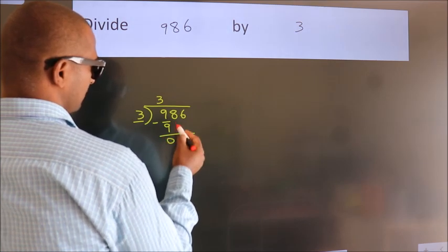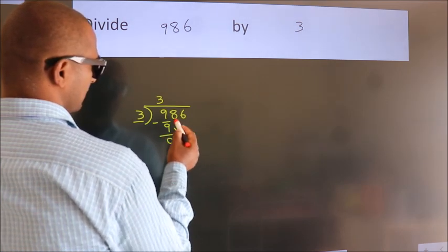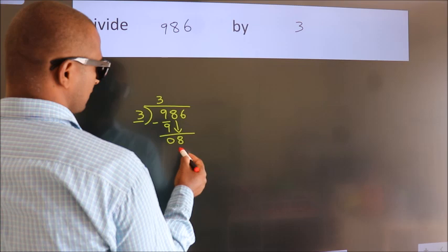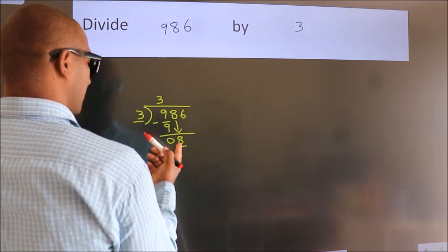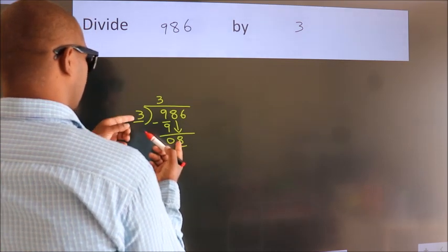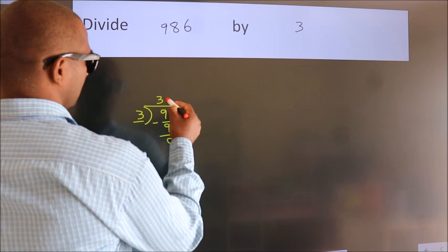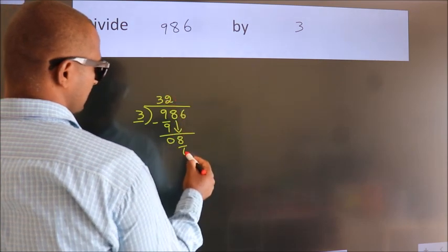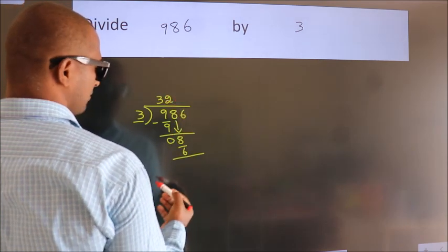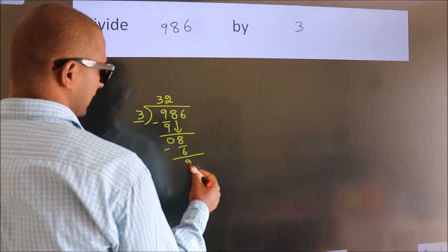After this, bring down the beside number. So 8 down. So 8. A number close to 8 in 3 table is 3 2's, 6. Now we subtract. We get 2.